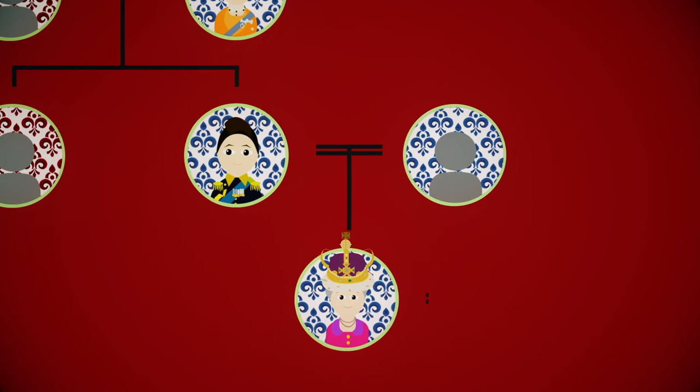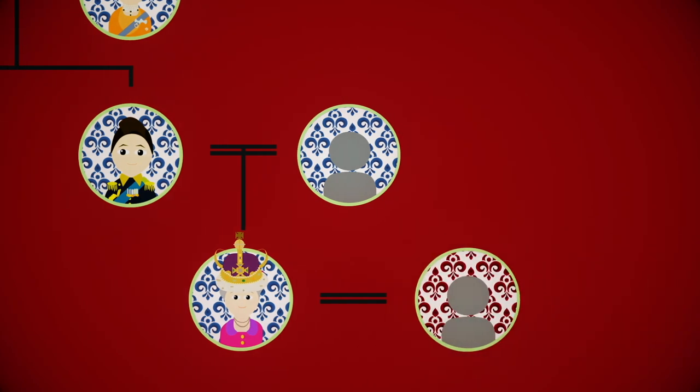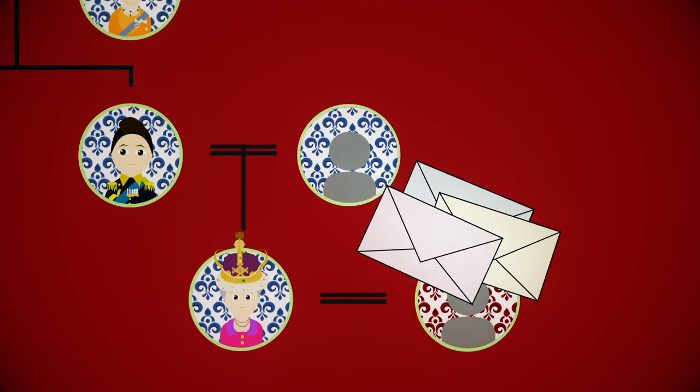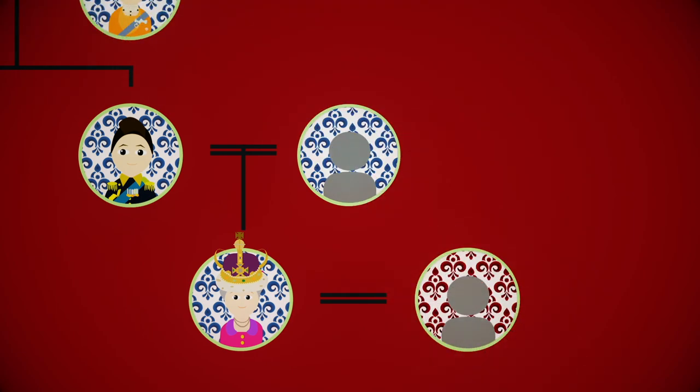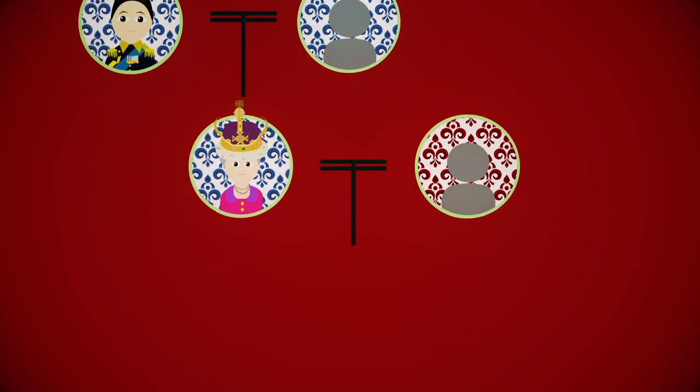When Elizabeth was 15, she met her second cousin, Prince Philip. And after exchanging letters since the age of 13, they were granted permission to announce their engagement. Philip held Danish and Greek titles and was not allowed to marry Elizabeth unless he relinquished them to become a British subject.